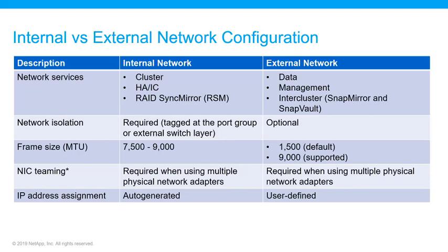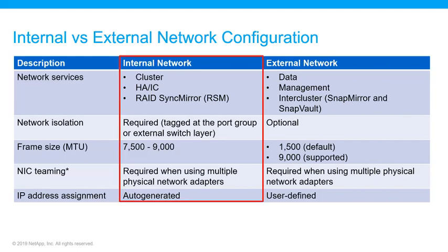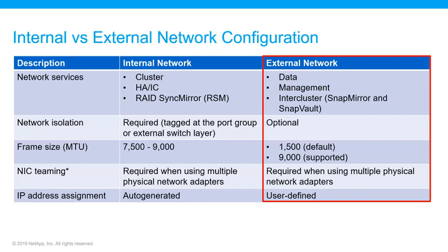This table summarizes configuration details for the internal and external networks. The internal network enables ONTAP SELECT nodes in the same cluster to communicate with one another. Large frames are supported with MTU sizes between 7500 and 9000 bytes, and IP address assignment is auto-generated. The external network provides access to client traffic, management applications, and inter-cluster connectivity. Network isolation is required on the internal network but is optional on the external network. Frame sizes default to 1500 bytes but jumbo frames are supported, and IP address assignment is user defined.